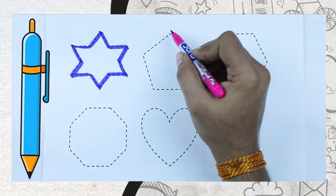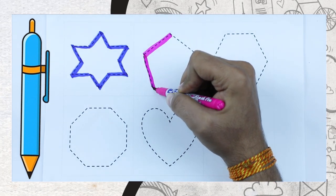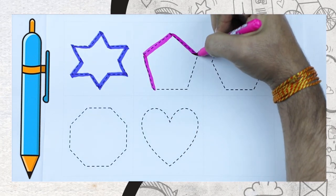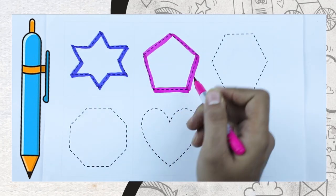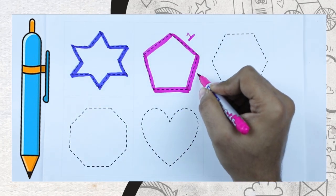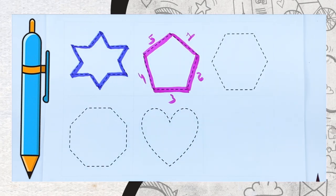Now we make pentagon. Pentagon has five lines, five surfaces. It's one, two, three, four, five. That's why it's called pentagon.